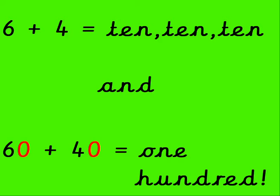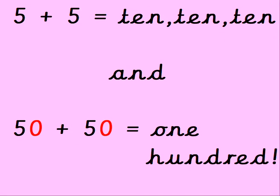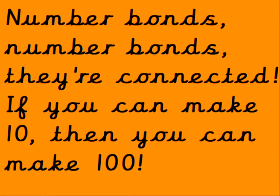5 add 5 makes 10, 10, 10, and 50 add 50 is 100.